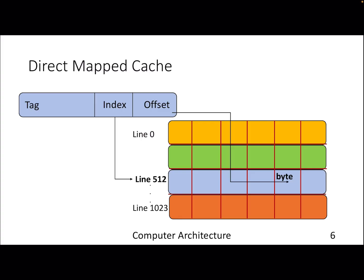Only when the 17 bits match should we provide the block number and byte. That's the notion of what is called a direct mapped cache — where you have a one-to-one mapping between your index bits and the location where the data is. Once you find the particular line, you go for a particular byte based on the offset bits, but before that you must get a tag hit.